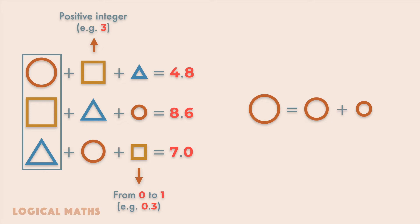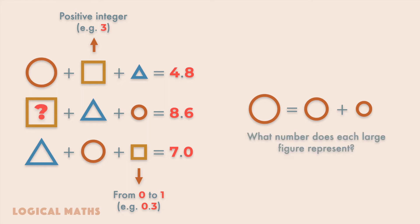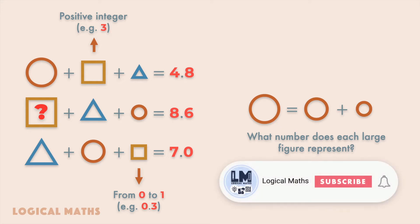For example, the large circle represents a sum of the numbers represented by the medium circle and small circle. What number does each large figure represent? Pause the video if you want to figure it out for yourself, and then keep on watching the video for a solution.